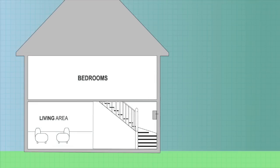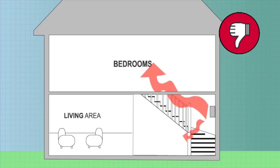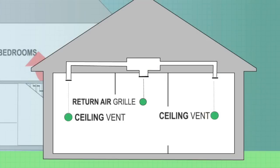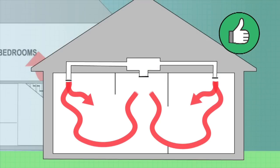For split and ducted systems, locate the wall units or ceiling vents so air isn't blown directly towards openings, such as stairwells. Locate ceiling vents to allow maximum circulation back to the return air grill.